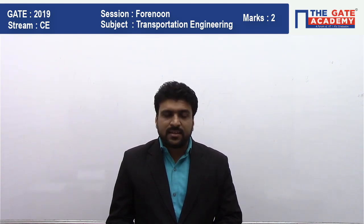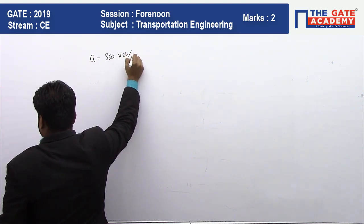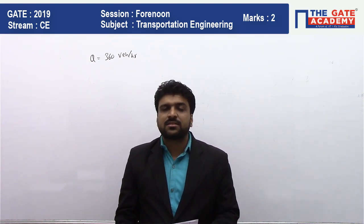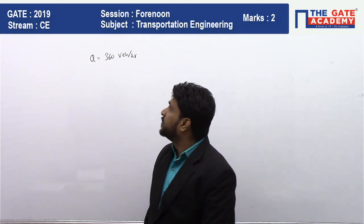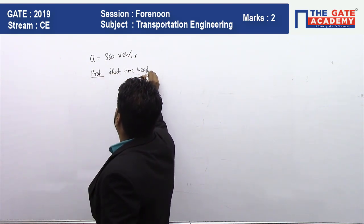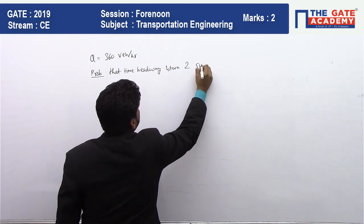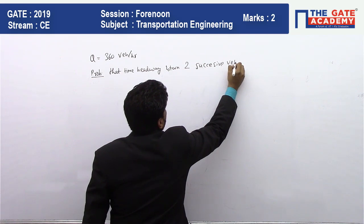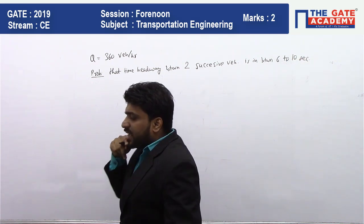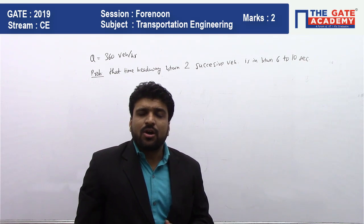The flow of vehicles is 360 vehicles per hour. Find the probability that the time headway will be between 6 to 10 seconds for two successive vehicles. We need to find the probability that the time headway between two successive vehicles is between 6 to 10 seconds, given that vehicles follow a Poisson distribution.